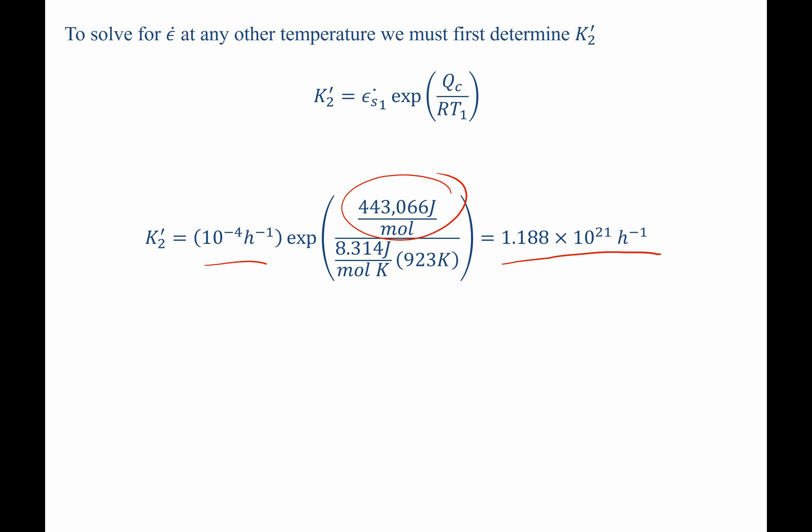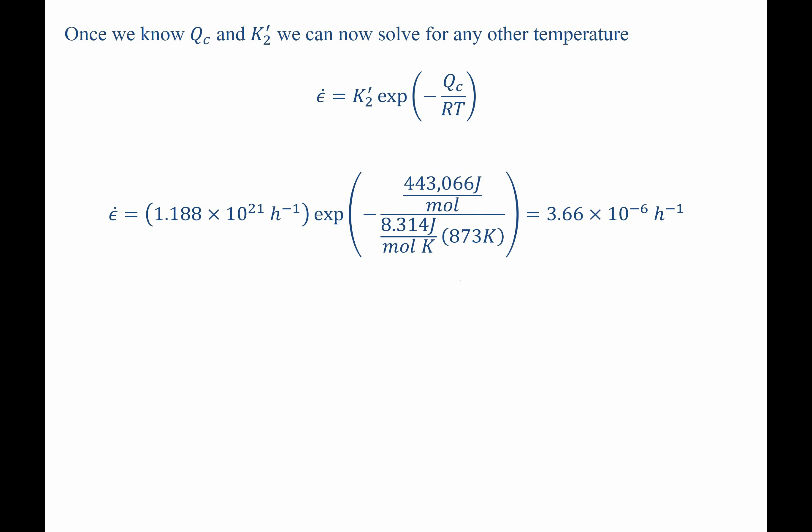And what's great is that now we know this pre-exponential value, k2 prime, and the activation energy, Qc, we can go ahead and use them to solve for the steady state creep strain rate at any given temperature by plugging it into our initial formula. Plugging in values, we find that in this case, at 873K, which was asked for in this problem, that our steady state creep strain rate is 3.66 times 10 to the negative 6 per hour.